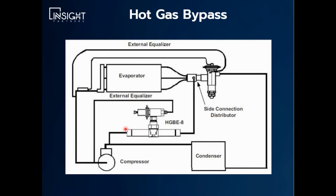Hot gas bypass is a totally different strategy, totally different animal. You have your four basic components: your compressor, condenser, TXV, and an evaporator. What happens in some HVAC systems is you have a varying load condition — it could be pretty dramatic, like a VAV application or a 100% outdoor air application. If this is a five-ton compressor and you have five tons of load, that's great. But let's say your load drops to two tons. What happens is the refrigerant starts to get very low in temperature and pressure as it gets sucked back into the compressor — it actually freezes up your system.